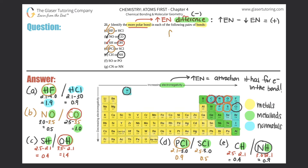For part f, SO versus PO. Both have oxygen at 3.5. Sulfur is 2.5 and phosphorus is 2.1. For SO: 3.5 minus 2.5 gives an electronegativity difference of 1.0. For PO: 3.5 minus 2.1 gives 1.4. Since 1.4 is larger than 1.0, PO is the more polar bond because it has the highest electronegativity difference.